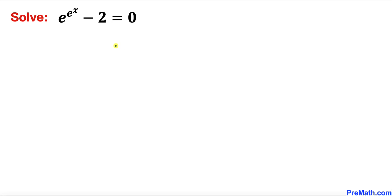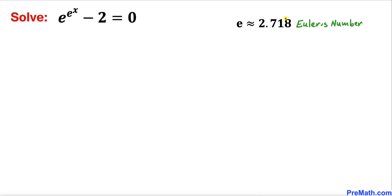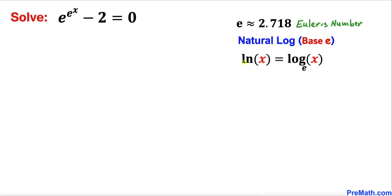Let's get started with the solution. This e value is called Euler's number, and e is approximately equal to 2.718. Before we go any further, let's talk about natural log: when the base is e, natural log is represented by ln, and ln of x equals log of x with base e.